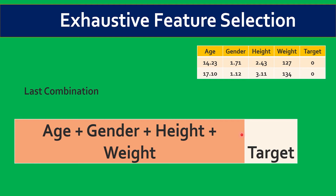In the end, it will see which combination gives the best accuracy, and based on that it will select the final subset of features. It starts by taking one independent variable at a time, then combinations of two, then three, then all four independent variables to predict the value of the target variable.